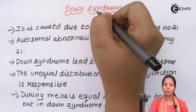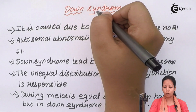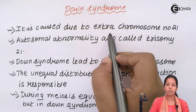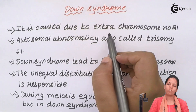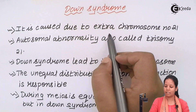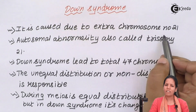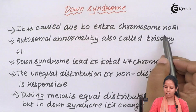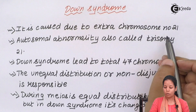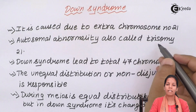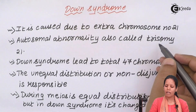Now, if I talk about Down syndrome, it is a disorder in which there is an extra chromosome present at the 21st position. And since there is an extra chromosome present, it is also called Trisomy 21. When I say trisomy, it means three.